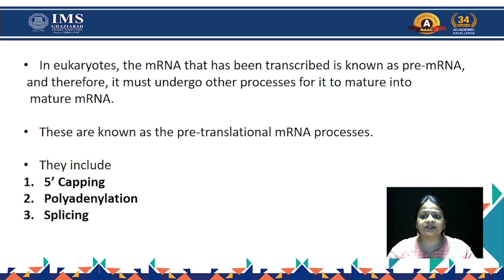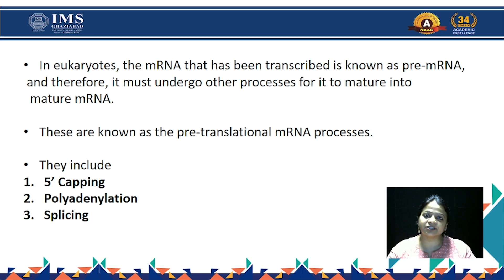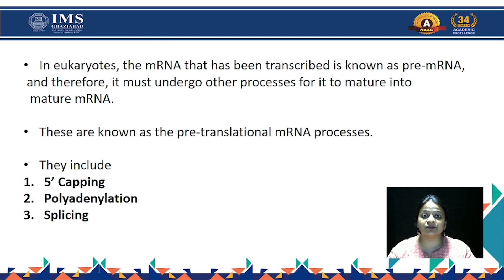In eukaryotes, the messenger RNA that has been transcribed is known as pre-messenger RNA. It must undergo other processes to mature into the mature messenger RNA. These are known as pre-translational messenger RNA processes. Before translation starts, the messenger RNA needs to become more stable and mature, and then only translation starts.